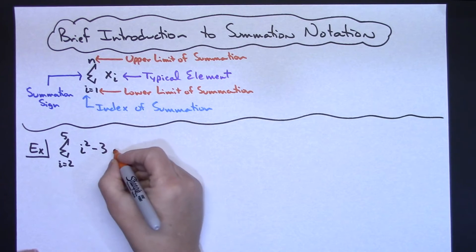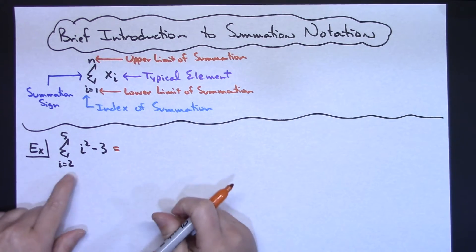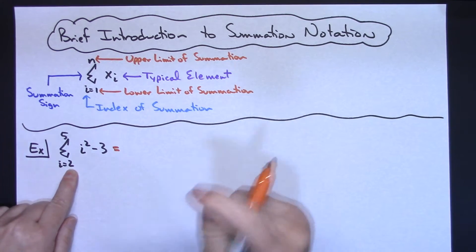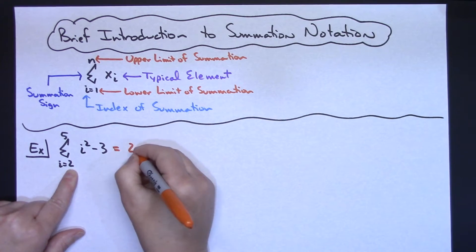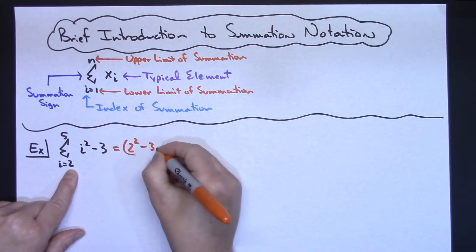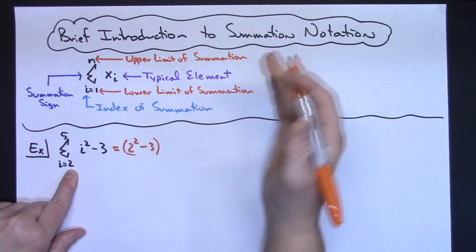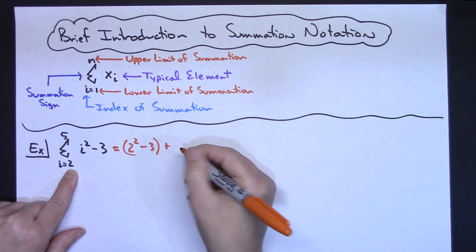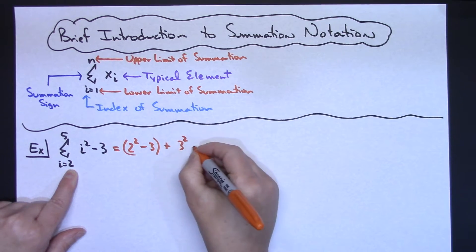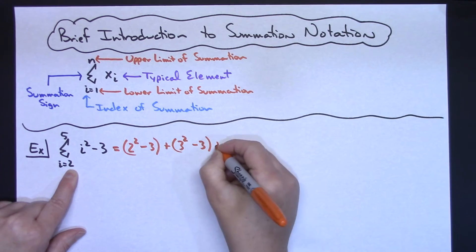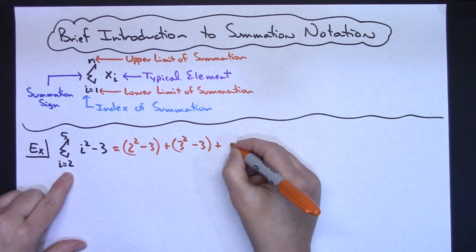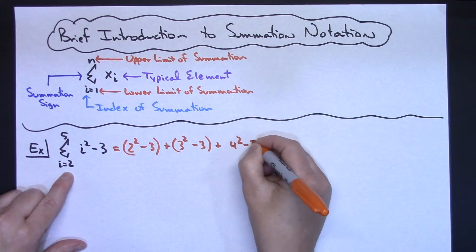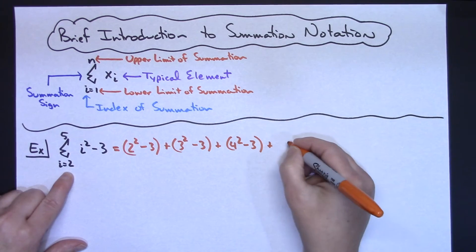So this summation would be equal to, I'm going to start with putting i in as a 2, so 2 squared minus 3. And it's a summation, so that plus, then when i goes up to 3, I would have 3 squared minus 3. And then when i goes up to 4, I would have 4 squared minus 3. And then when i goes up to 5, I would have 5 squared minus 3.